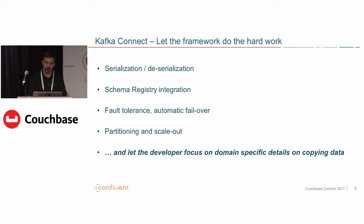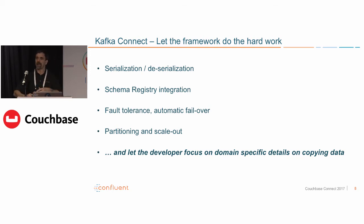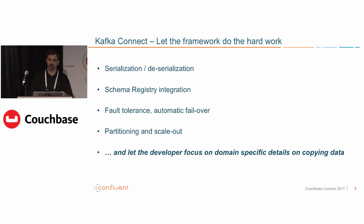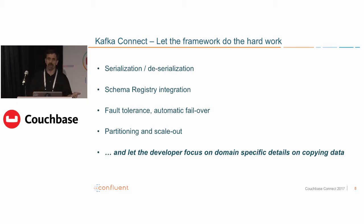A new feature that's been around in the Confluent platform for about three or four months — it's actually part of Apache Kafka core and all open source — is single-message transforms. If you've got a data bucket in Couchbase with a document record that has 37 fields, but you only care about five of them to land into a file or S3 bucket, you can have a single-message transform that filters out those five fields, or forks an event into two different topics depending on the value of a field — for example, West Coast events to topic one and East Coast events to topic two.